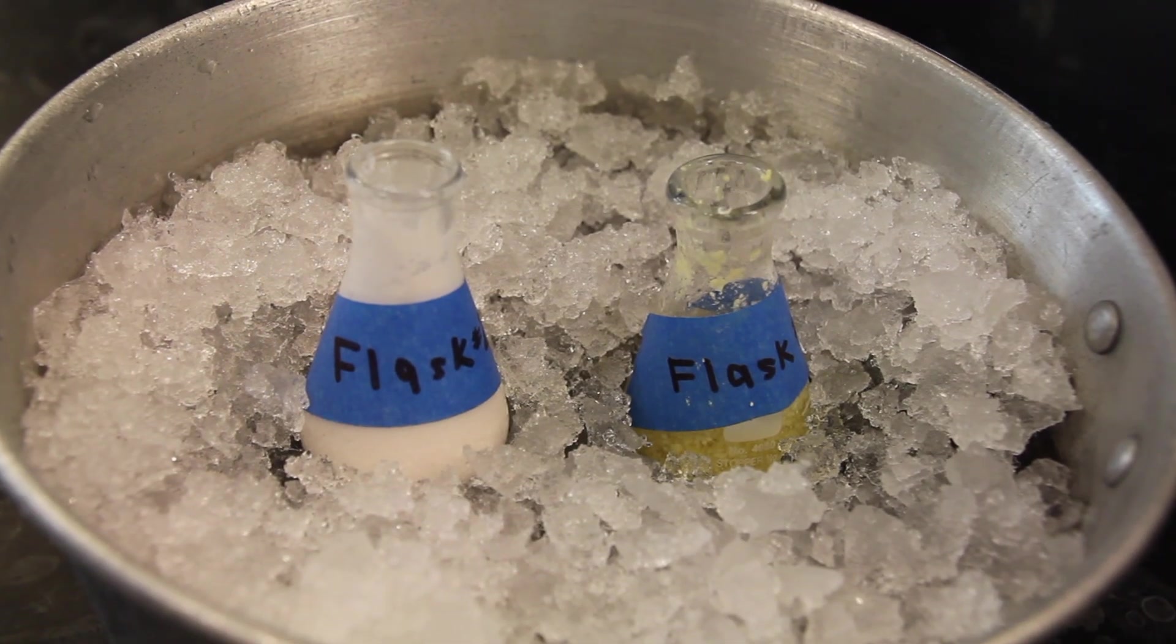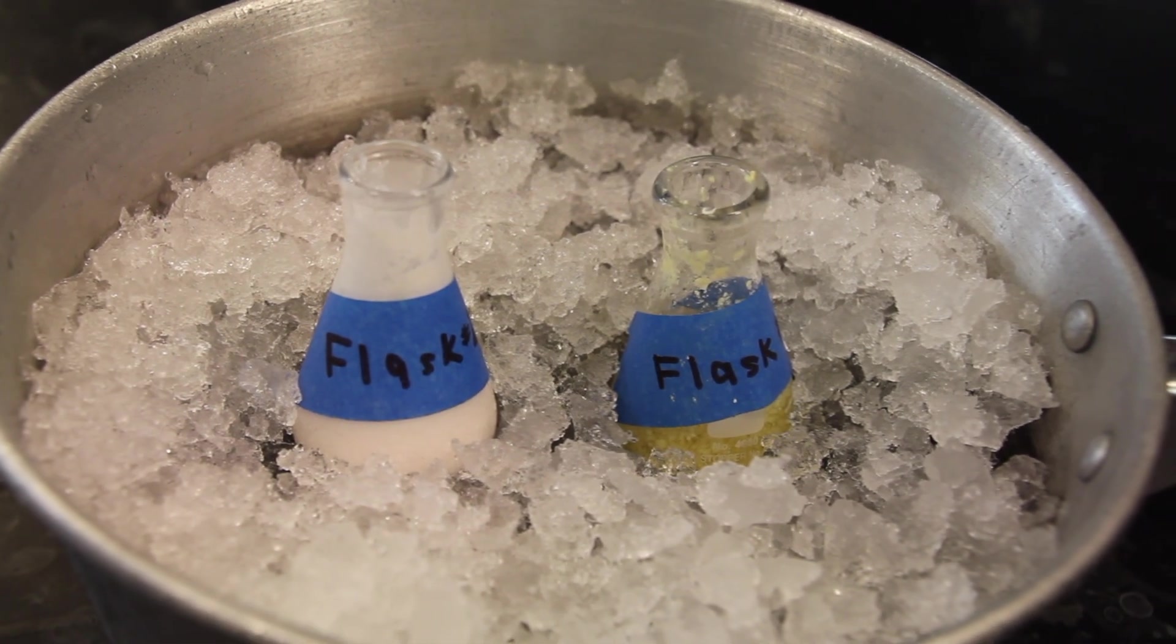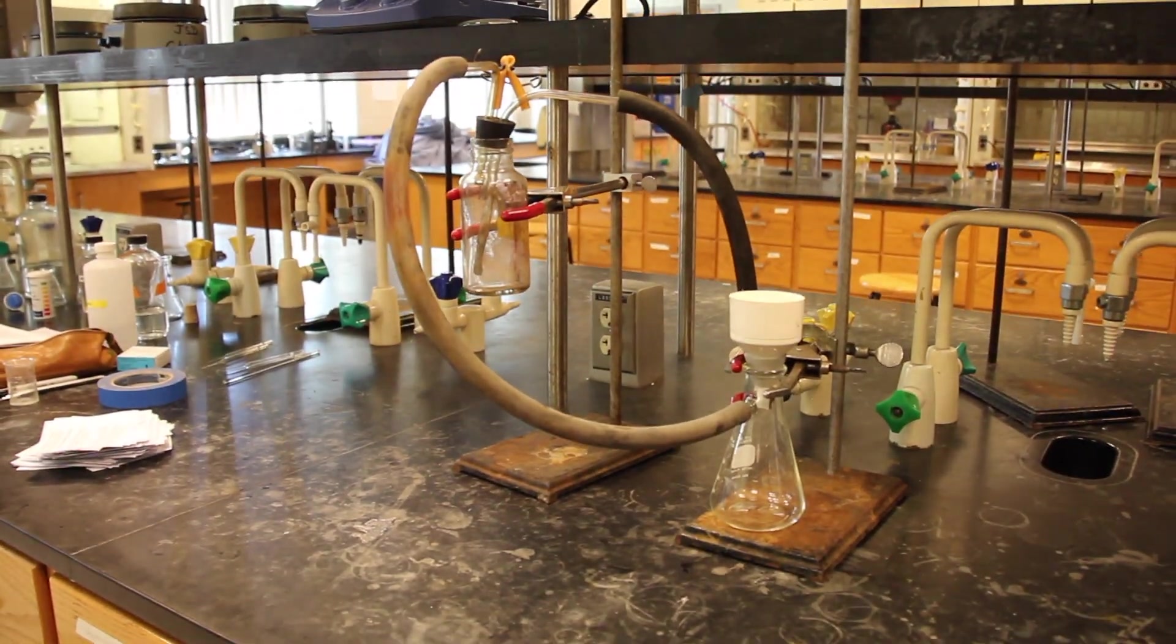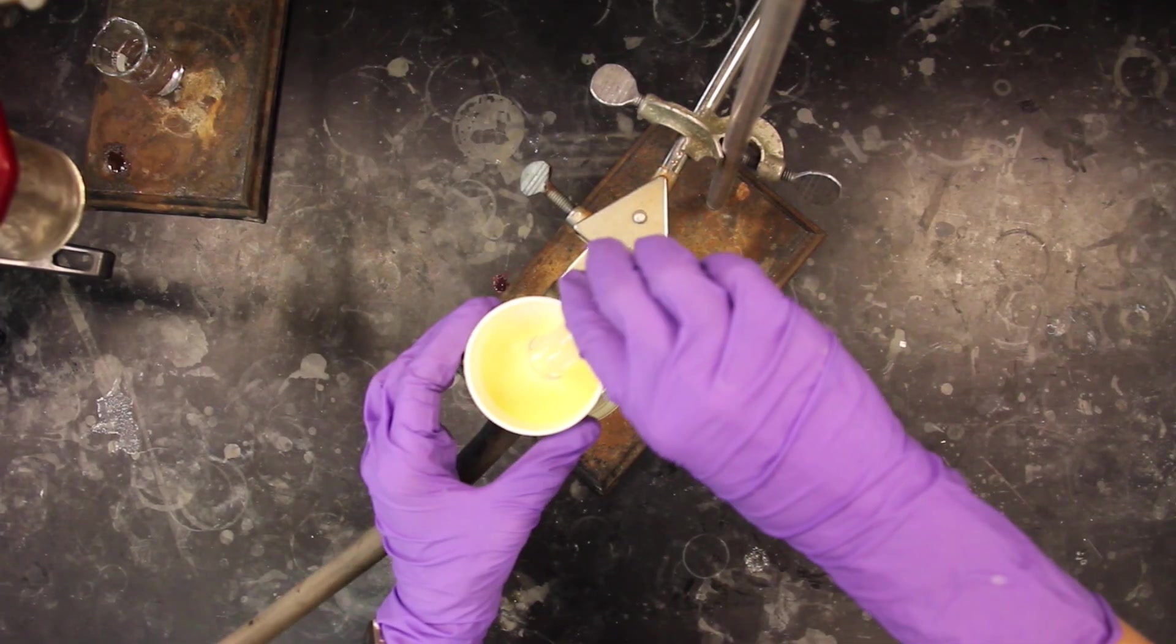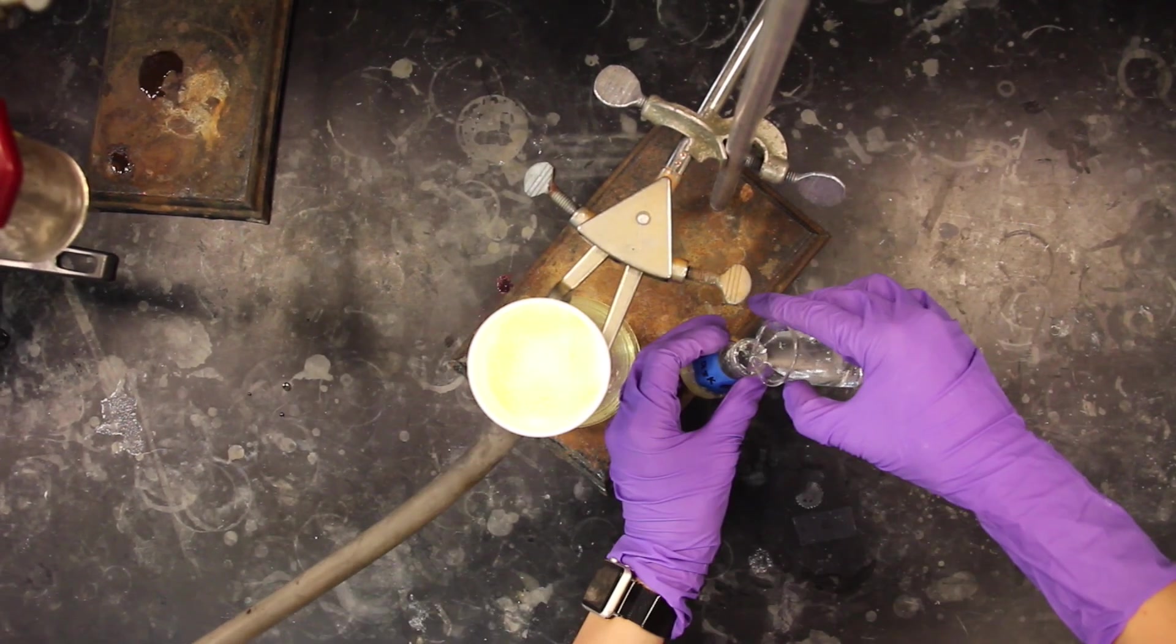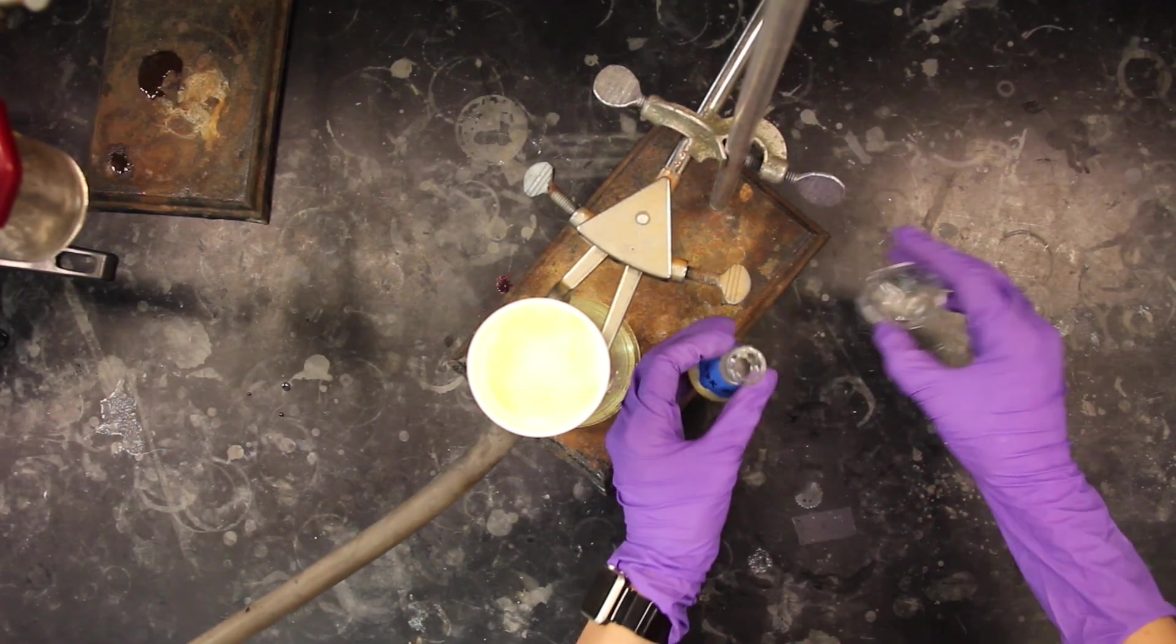Cool flasks 1 and 2 in an ice bath for 10 to 15 minutes. Isolate any solids present via Buechner funnel vacuum filtration and wash the crystals on the filter paper with a small quantity of ice water to rinse.